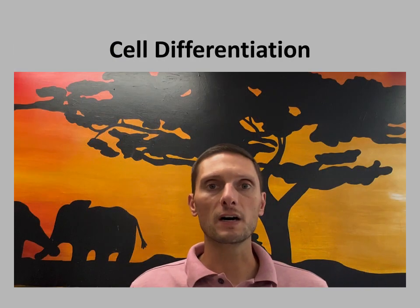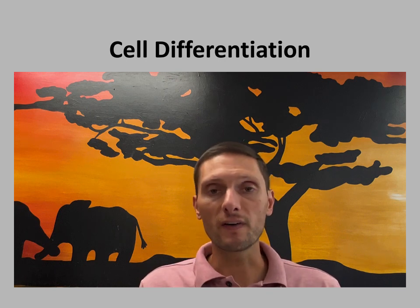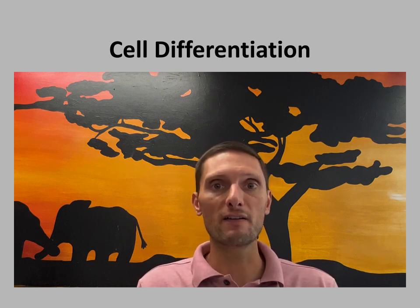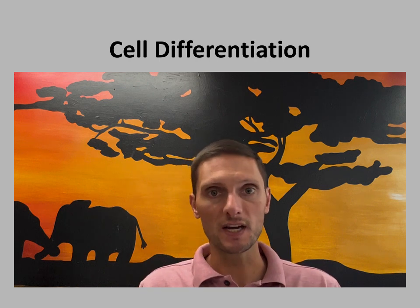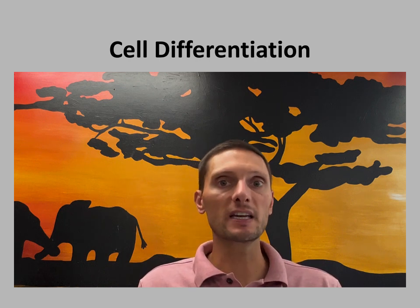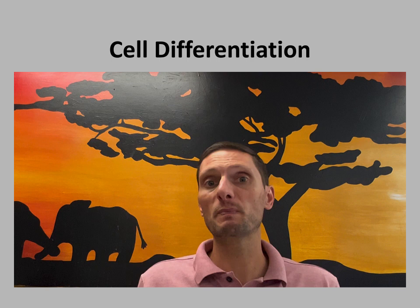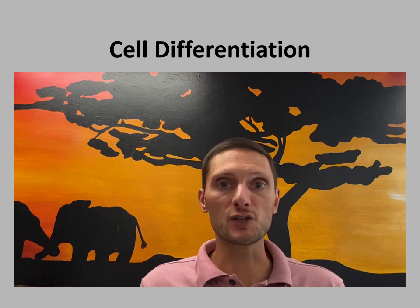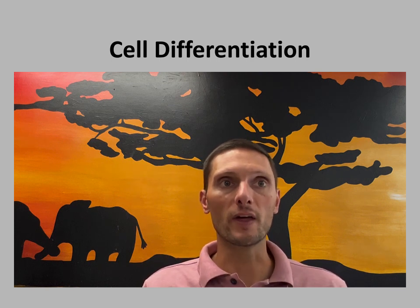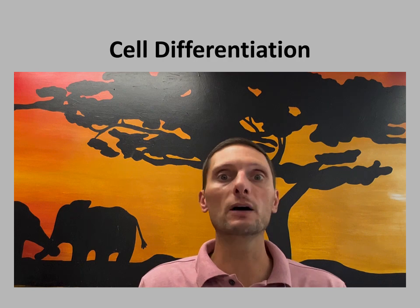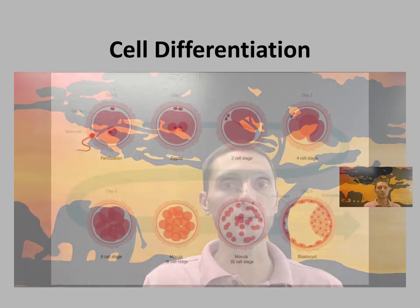While prokaryotic cells have a single cell that maintains all life functions, eukaryotic cells have thousands, millions, or trillions of cells — each typically specialized to carry out different jobs to help the organism survive. The process by which cells become different is called cell differentiation.